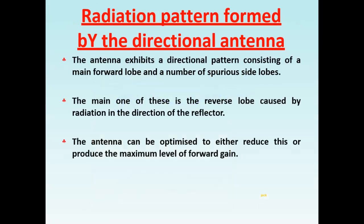Radiation pattern formed by the directional antenna. The antenna exhibits a directional pattern consisting of a main forward lobe and a number of spurious side lobes. The main one of these is the reverse lobe caused by radiation in the direction of the reflector. The antenna can be optimized to either reduce this or produce the maximum level of forward gain.